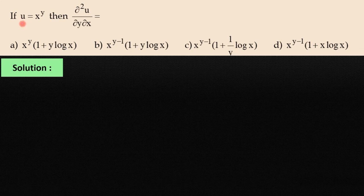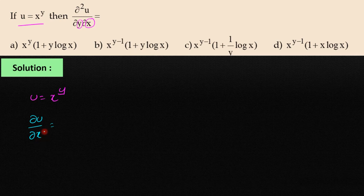Given u = x^y. Partially differentiating with respect to x: y is constant, so it is in the form x^n, and differentiation of x^n is n·x^(n-1). So ∂u/∂x = y·x^(y-1).